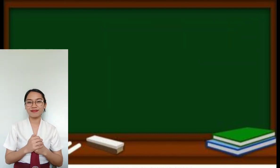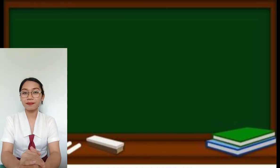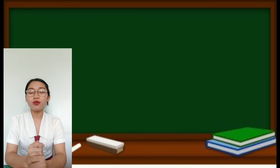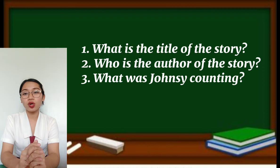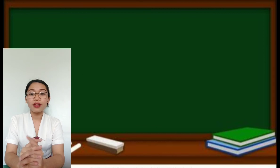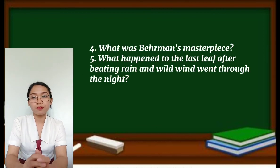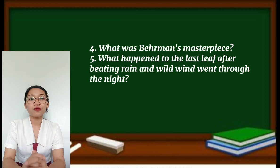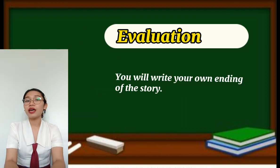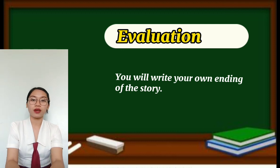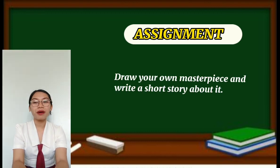Is there any questions? Okay, everybody understand the story? Now, for your activity, I want you to answer these questions. Number one, what is the title of the story? Number two, who is the author of the story? What was Jansi counting? What was Berman's masterpiece? What happened to the last leaf after the beating rain and wild wind went on through the night? For the evaluation, you will write your own ending of the story. And for your assignment, draw your own masterpiece and write a short story about it.